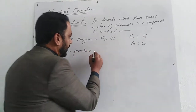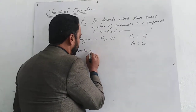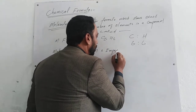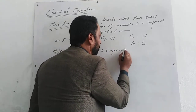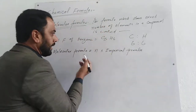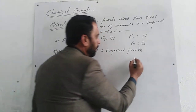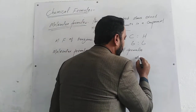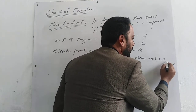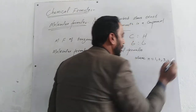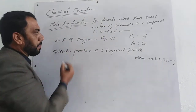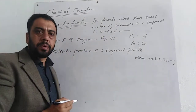Molecular formula ہم find out کرتے ہیں کس چیز سے؟ n multiplied by empirical formula. Where n ہمارے ساتھ ہے 1, 2, 3, 4 and so on. اب ہم معلوم کرتے ہیں molecular formula مختلف compounds کی.